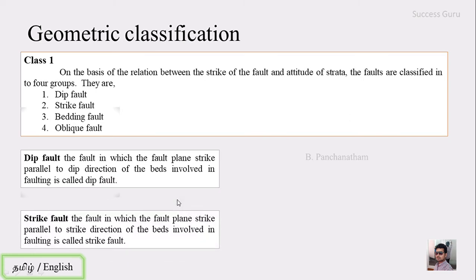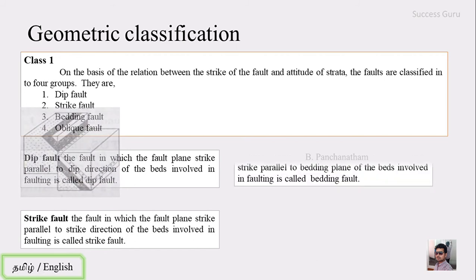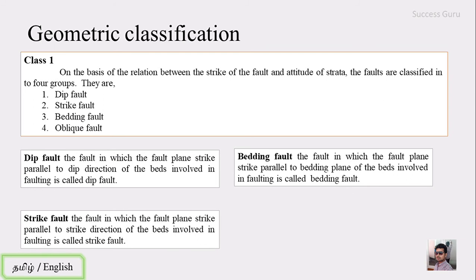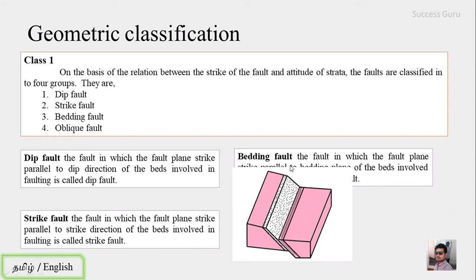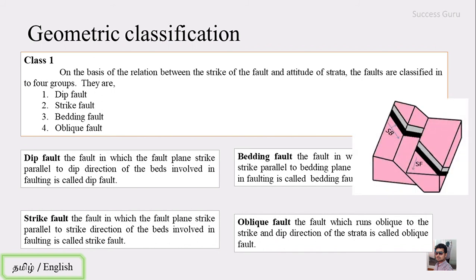The strike fault is one in which the fault plane strike is parallel to the strike direction of the beds. The bedding fault is one where the fault plane strike is parallel to the bedding plane itself. If the fault plane strike does not match the strike, dip, or bedding plane, then it is called an oblique fault. So: dip fault — fault plane strike parallel to dip; strike fault — parallel to strike; bedding fault — parallel to bedding plane; oblique fault — none of these.